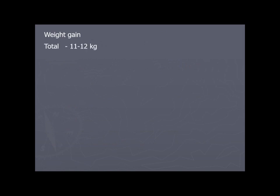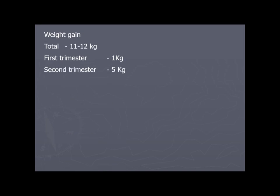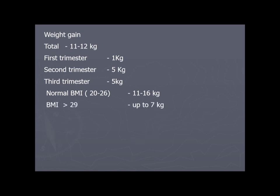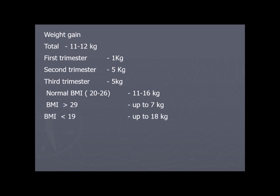Total weight gain during pregnancy is 11–12 kg: approximately 1 kg in the first trimester and 5 kg in the second trimester. For a person with normal BMI (20–26), the average weight gain is 11–16 kg. A person with BMI above 29 is advised to gain only up to 7 kg, while a person with BMI below 19 can gain up to 18 kg.